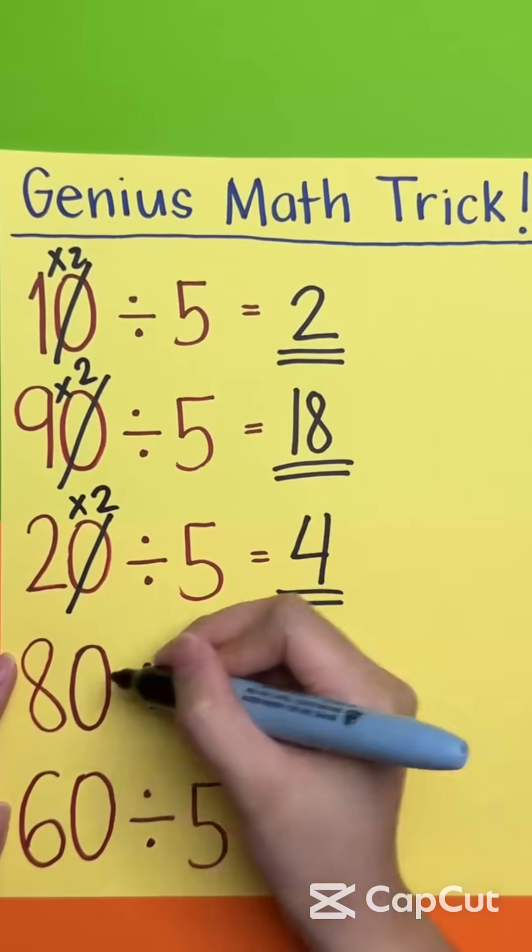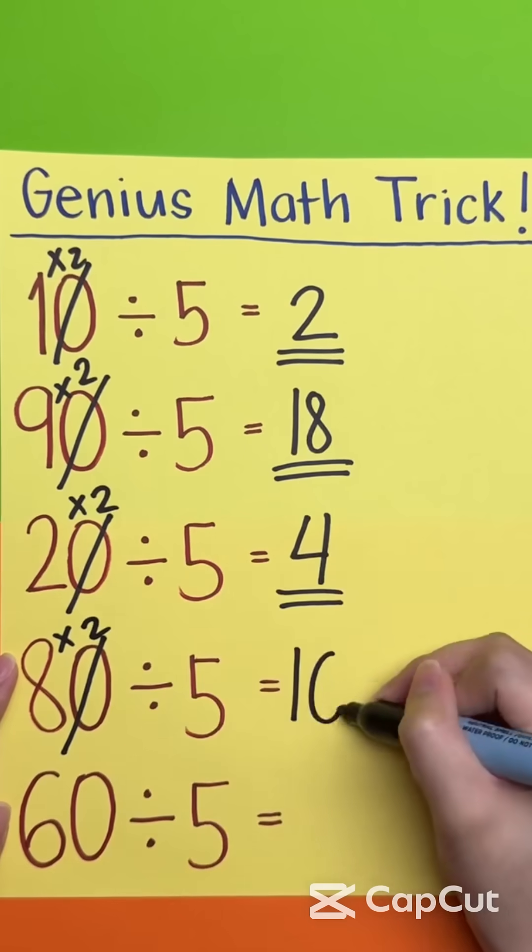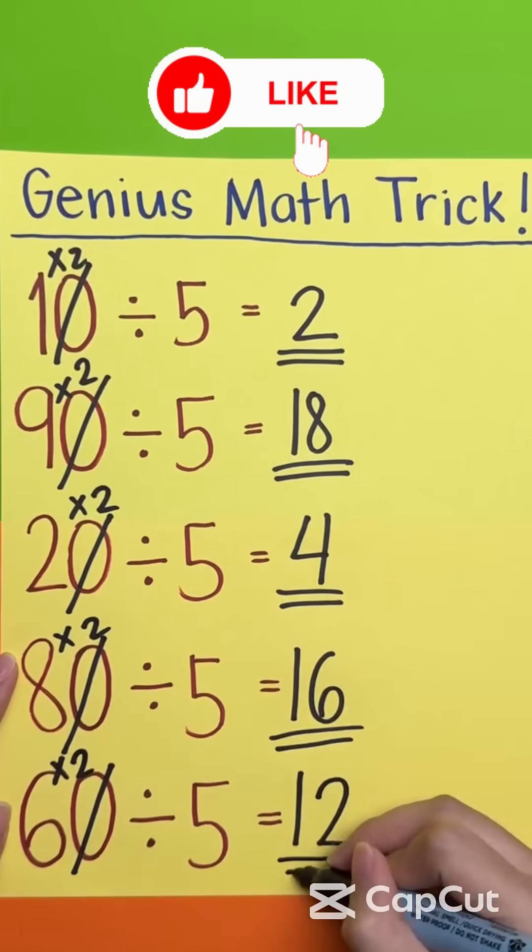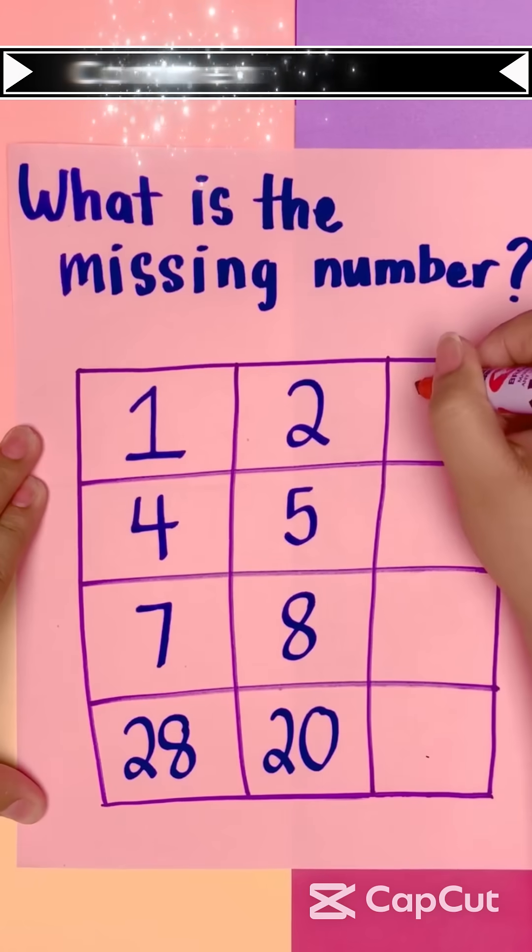Number five, and finally, why didn't the angle go to the party? Because it was just too obtuse. Yeah, we all know that one friend.